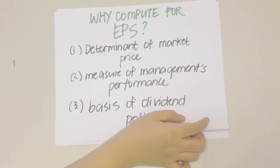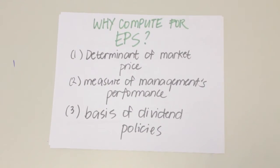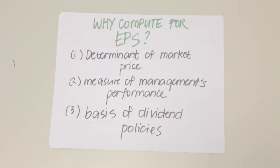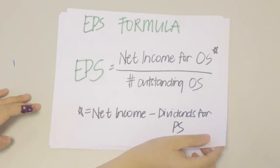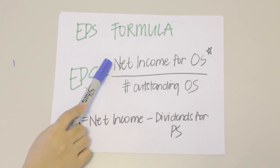So why do we compute for earnings per share? First, it is a determinant of the market price of an ordinary share; therefore, earnings per share is indicative of its attractiveness as an investment. Second, earnings per share is a measure of the performance of management in conducting its operations. Third, earnings per share is the basis of dividend policies of the company.